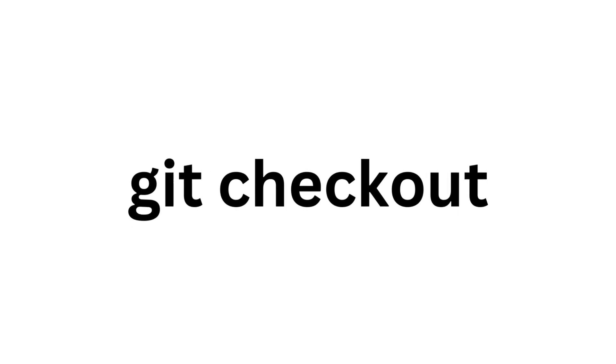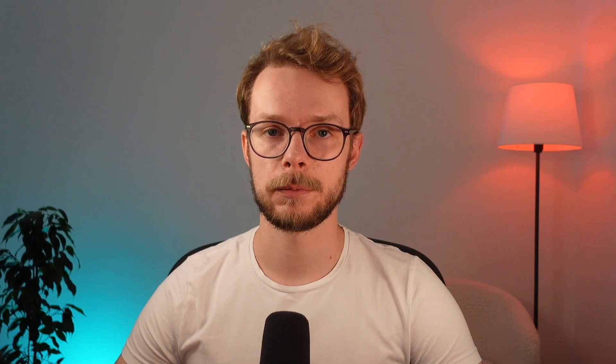Git checkout. Usually this command is used to switch to a different branch or to a different commit, but you can also use it to undo changes in your working directory. If you have changes that are not committed yet, you can use git checkout dot to discard them.